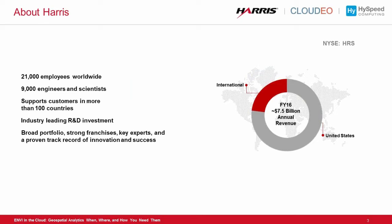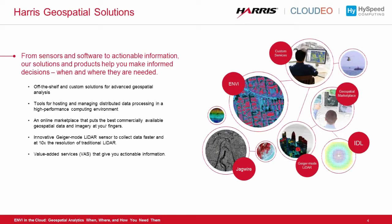Harris Corporation is a worldwide organization operating in about 100 countries. We have about 21,000 employees, 9,000 of which are engineers and scientists, so we're pretty proud of that. Harris has four segments: communication systems, space and intelligence systems, critical networks, and electronic systems. We fall under space and intelligence systems, which in simplest terms provides broad sensor and payload expertise, extensive ground system development, and proven high-volume processing capabilities.